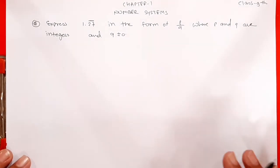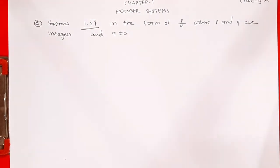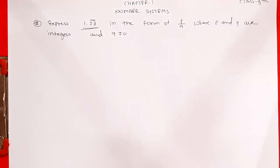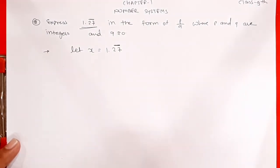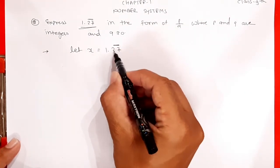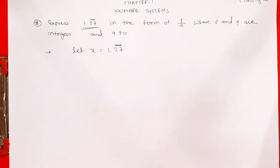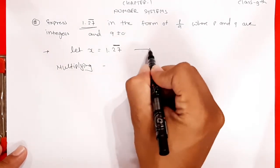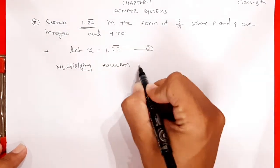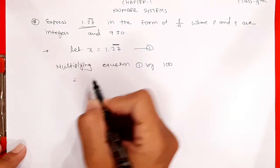Next example: express 1.27 bar in the form of P by Q, where P and Q are integers and Q does not equal 0. Sabse pehle let x equals to 1.27 bar. Point ke baad 2 digits ke upar bar hai — 2 digits ke upar bar hai — toh 100 se multiply karenge. Multiplying equation 1 by 100, on both sides.